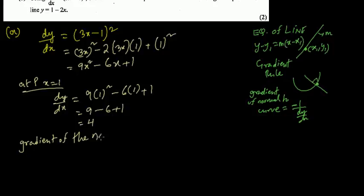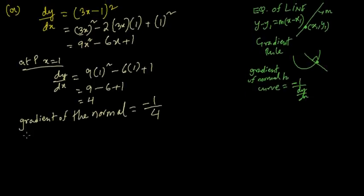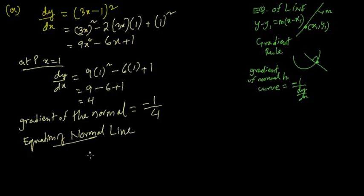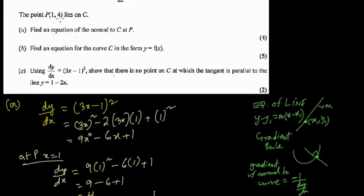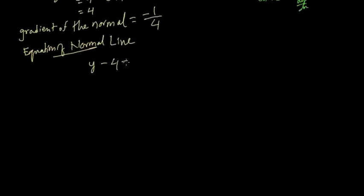The gradient of the normal is the negative reciprocal of 4, which is -1/4. We know point P, so we have both the gradient and the point. The y-coordinate of P is 4 and the x-coordinate is 1, so the equation of the normal is y - 4 = -1/4 × (x - 1).